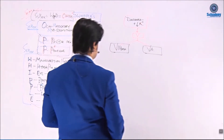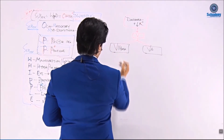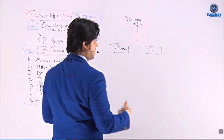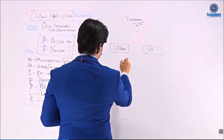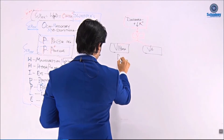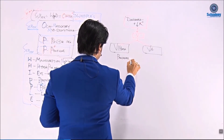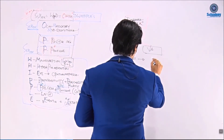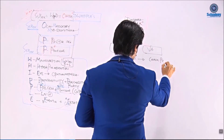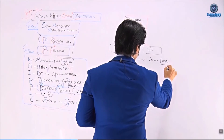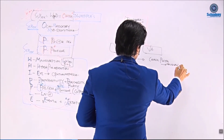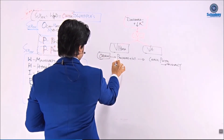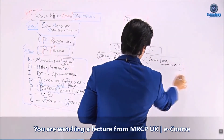The question is how to differentiate between these two. VIPoma is a vasoactive intestinal peptide-secreting tumor. In contrast, villous adenoma is a polyp arising from the colon — colonic polyps. The differentiating point is the origin: VIPoma originates from the pancreas and intestine, whereas villous adenoma originates as colonic polyps.